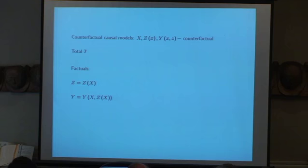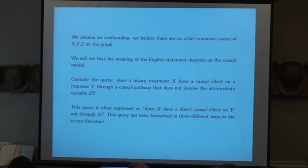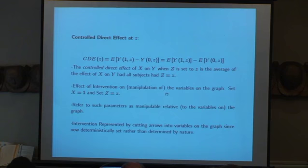We're going to assume no confounding. That is, we're going to believe there are no common causes of X, Y, and Z on the graph. But what do we mean by that? We'll see that the meaning of that English statement depends on the causal model. And to show how it does, we're going to consider the query: Does a binary treatment X have a causal effect on a response Y through a causal pathway that does not involve the intermediate Z? That is, does X have a direct causal effect on Y not through Z?